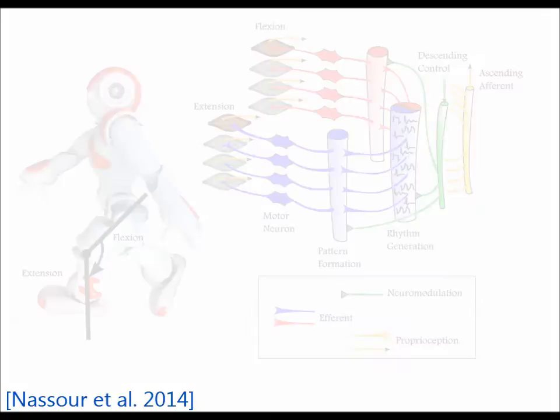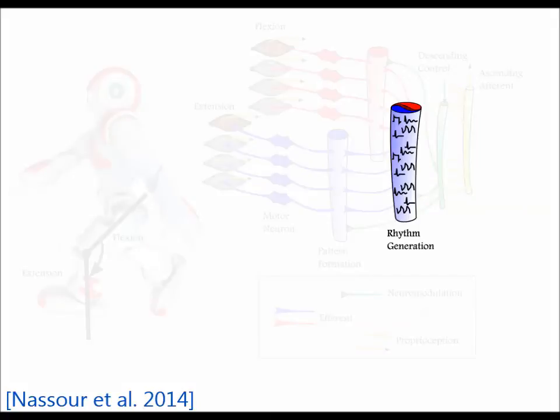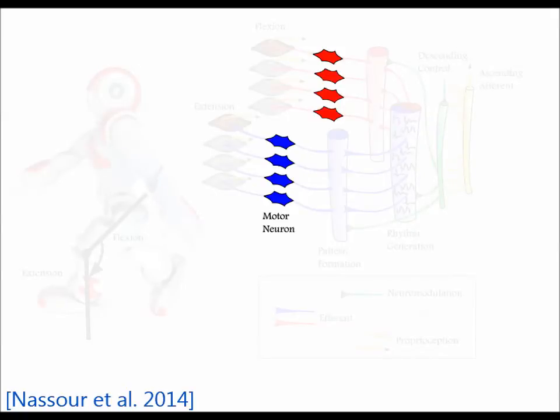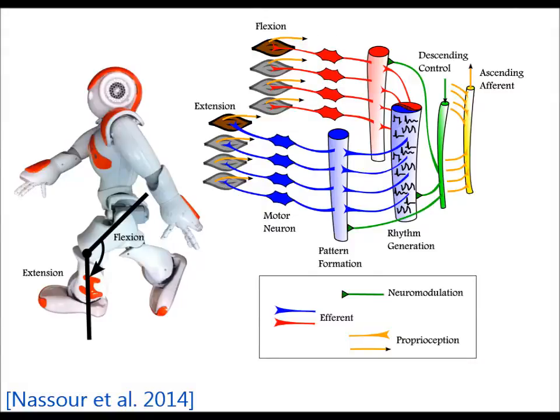This central pattern generator is separated into three layers: rhythm generation layer, pattern formation layer, and motor neurons layer. Similar to that in biological systems,